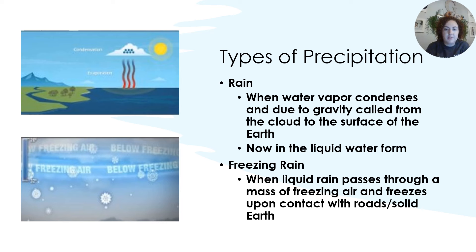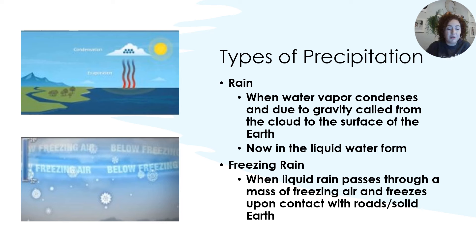Freezing rain. This is when liquid rain passes through a mass of freezing air and then freezes upon contact with roads or other surfaces of the Earth. We talked about this a little bit with winter storms, so this is a little bit of a recap. Watch these videos on your own time — you don't have to do them right now, but I feel like they explain them a little bit better because they're the people who know what's up.